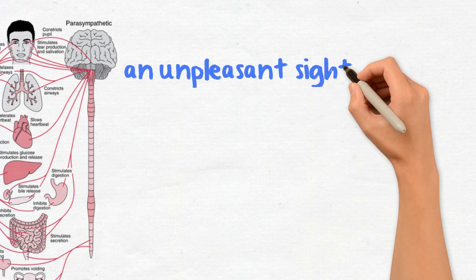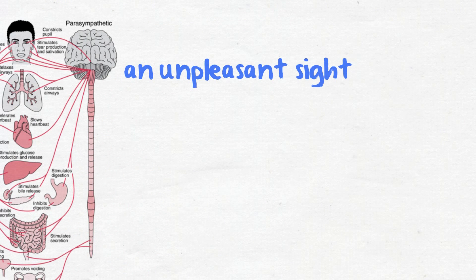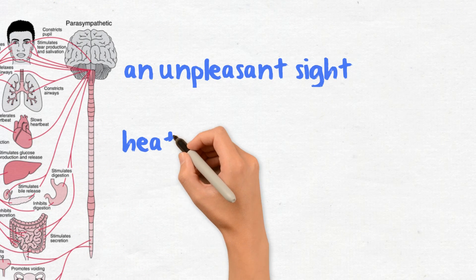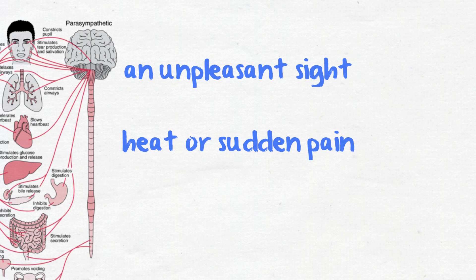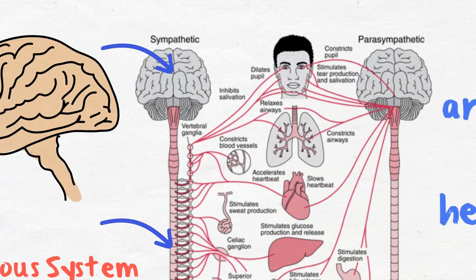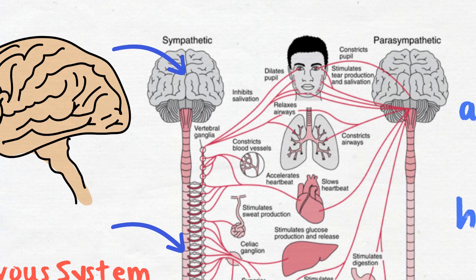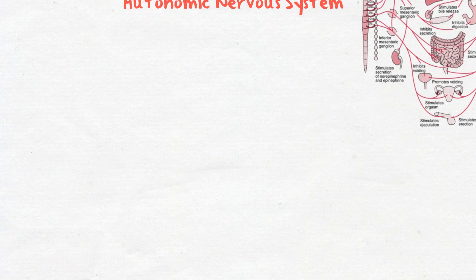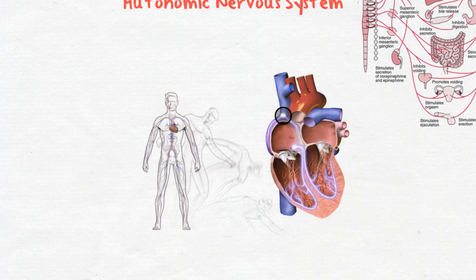An external trigger, such as an unpleasant sight, heat, or sudden pain, can temporarily cause the autonomic nervous system to stop working properly, resulting in a fall in blood pressure and fainting. It may also cause your heartbeat to slow down or pause for a few seconds, resulting in a temporary interruption to the brain's blood supply.